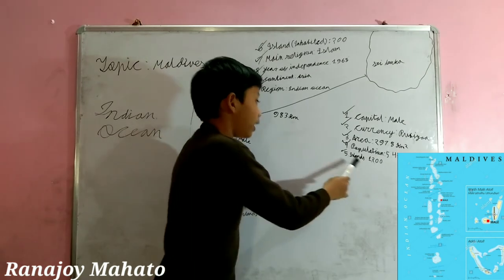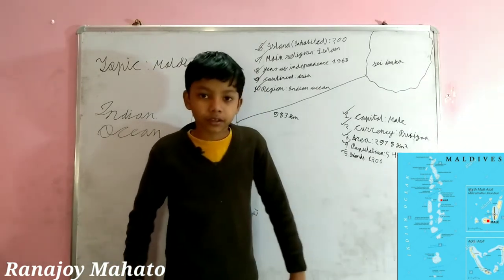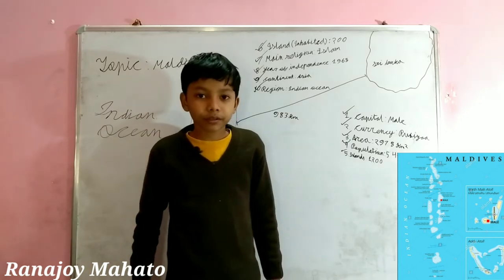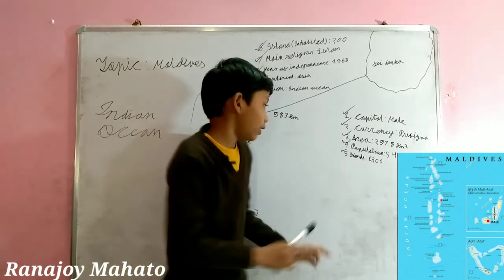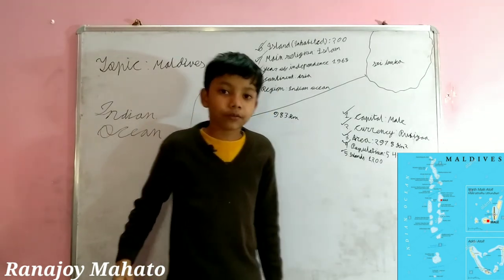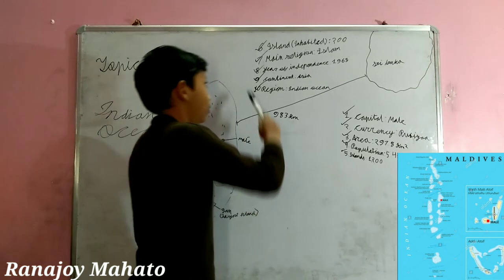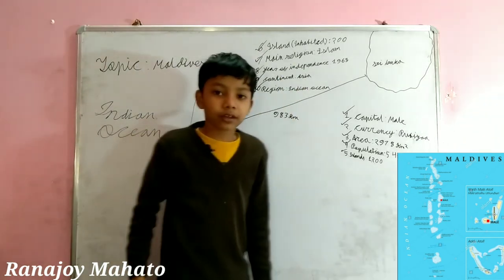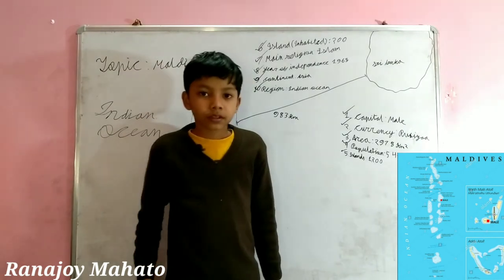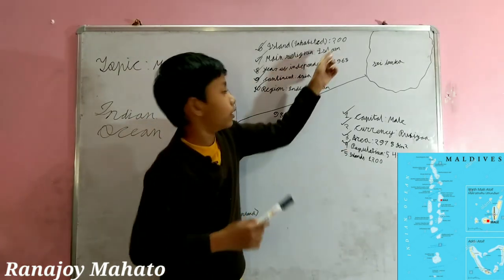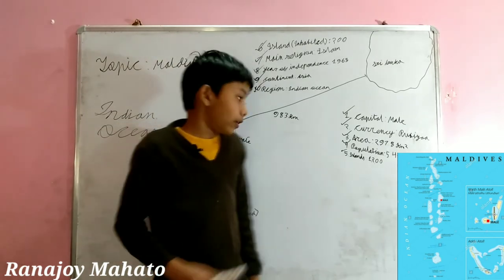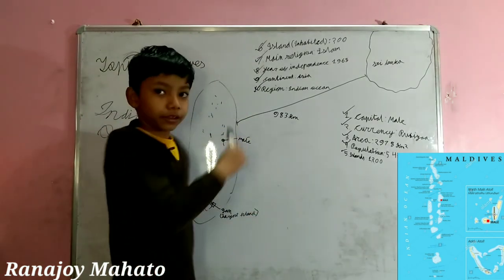How many islands are there in Maldives? Well, there are 1,200 islands in Maldives. How many islands are inhabited? Well, there are 200 of them. The rest 1,000 islands are scattered around uninhabited.